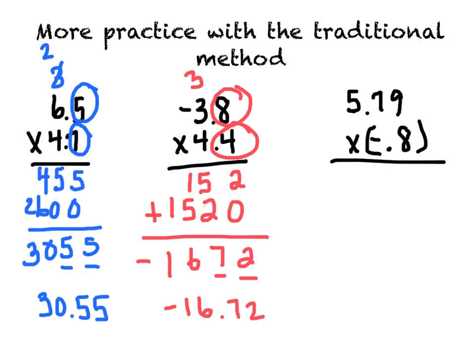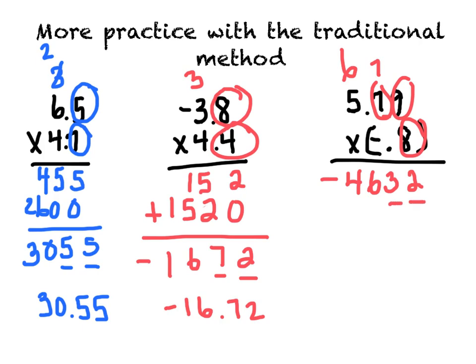The last problem in this practice is 5.79 times negative 0.8. We're working with one negative in our multiplication problem. We're going to start by multiplying like normal, as if those decimal places were not there. 9 times 8 is 72. 8 times 7 is 56, plus 7 more is 63. 8 times 5 is 40, plus 6 is 46. We need to figure out where to put our decimal place as well as whether our answer should be positive or negative. We're multiplying a positive times a negative, so our answer should be negative. We have 1, 2, 3 numbers behind the decimal in the problem, so we need 3 numbers behind the decimal in the answer. Our answer is negative 4.632. Hopefully you were able to get all of those answers.